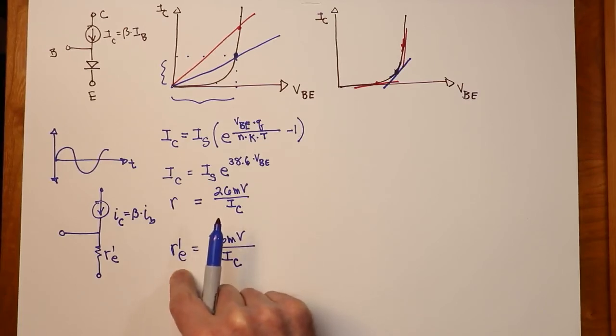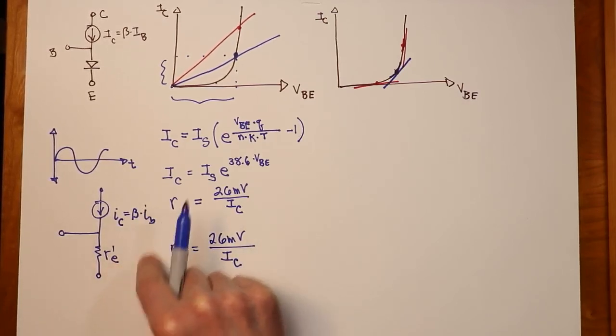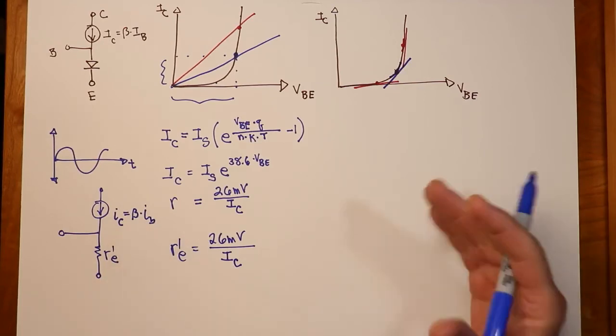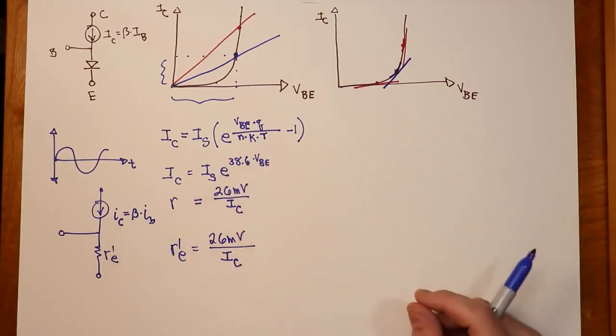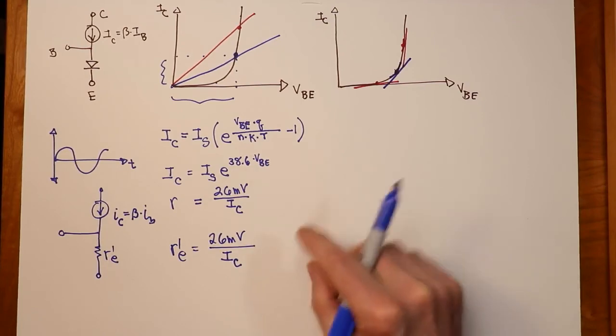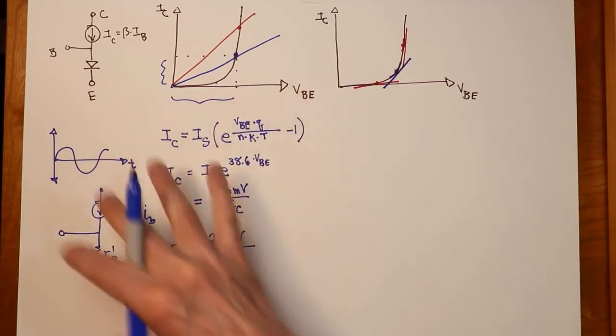So that's one reason why we want stability in terms of the DC. Without that, the R prime E won't be stable. And as we shall see, without R prime E being stable, it will be much more difficult to have these other circuit parameters be stable. Alright, so that is the basic model that we have.